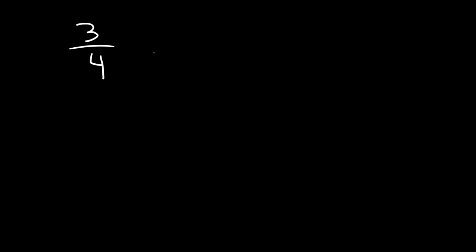Now let's look at another example: 3 divided by 4 and 2 divided by 3. Which fraction is greater? In this example, the numerator and the denominator are not the same. There are three different things you can do: you can convert each fraction into a decimal, or you can get common denominators and compare the numerators, or you can cross multiply.